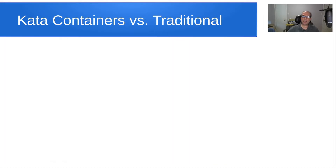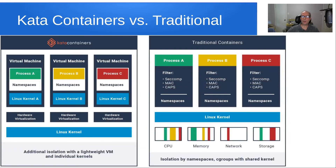What do Kata containers look like versus traditional Docker containers? From the Kata website slide: a Kata container has a virtual machine with a particular application process running, volatile and non-volatile data in namespaces, and a Linux kernel that is part of the container's virtualization. Under it, you have hardware virtualization from a small part of QEMU, which then sits on top of the Linux kernel of the host.